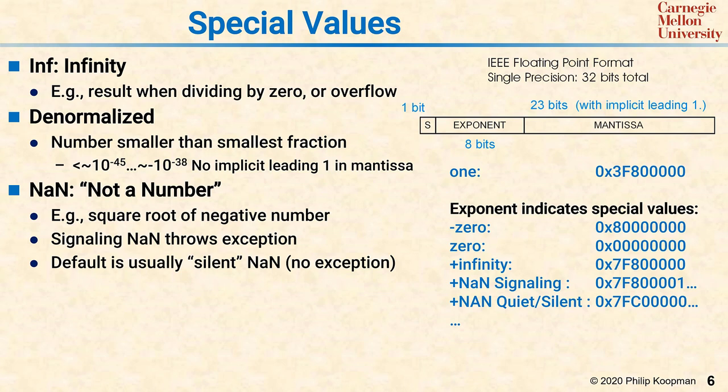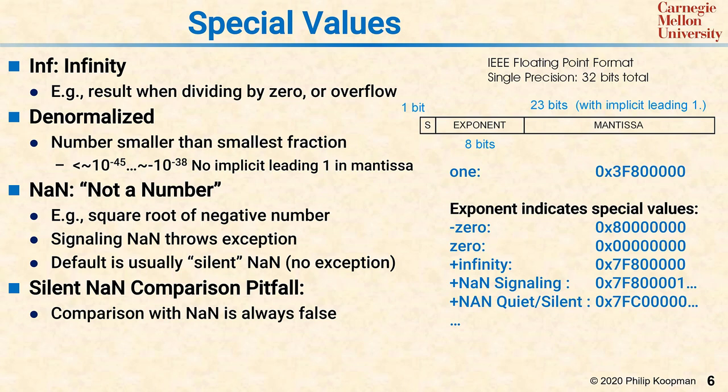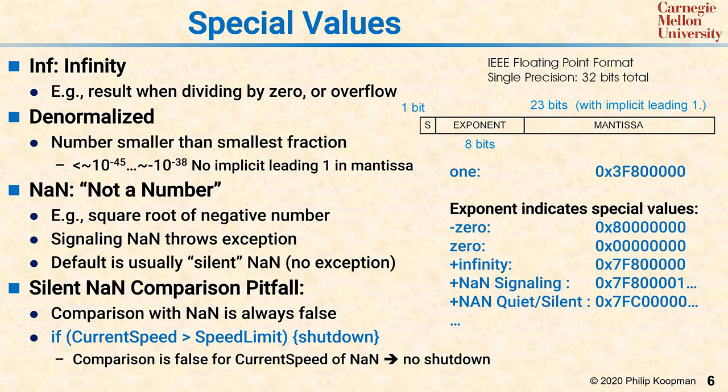There's a classic failure in embedded systems of a silent NaN comparison pitfall. Comparison with a NaN is almost always false, and that leads to issues such as speed limit checks that fail, and we've seen this in real systems. If you say, if the current speed is greater than the speed limit, do a shutdown. But if the current speed is NaN, there's no shutdown, because NaN greater than speed limit is defined to be false.